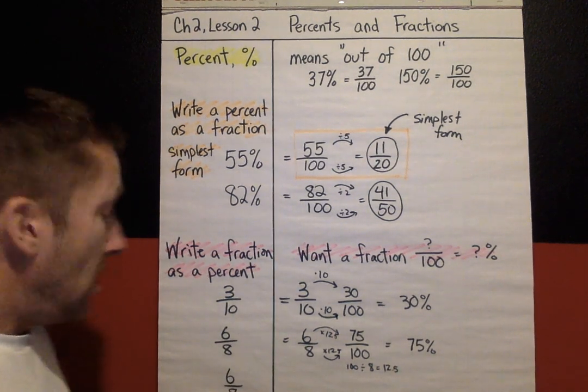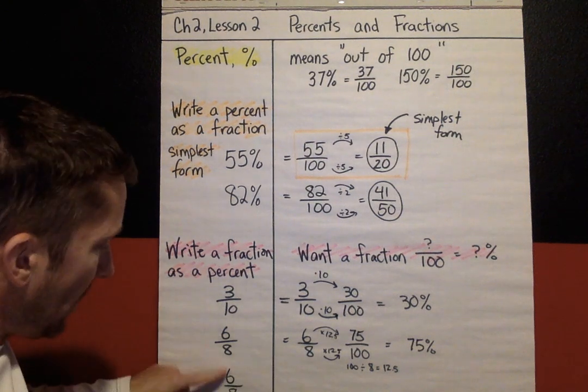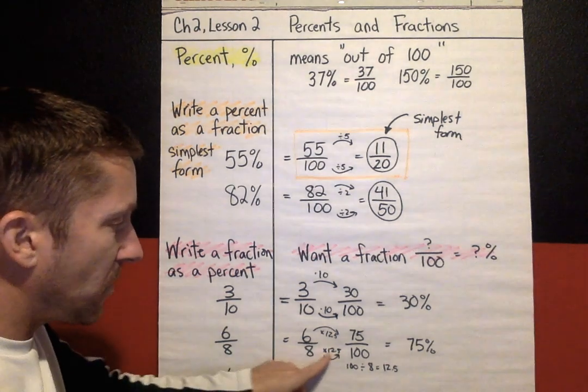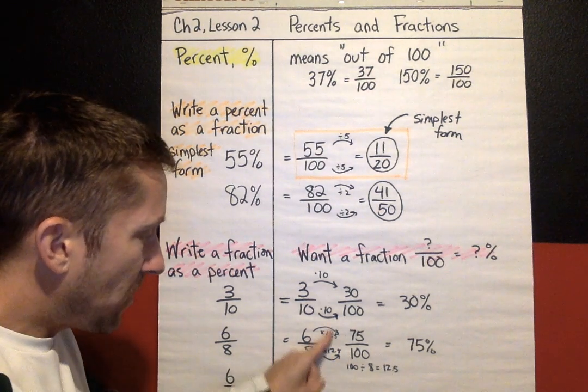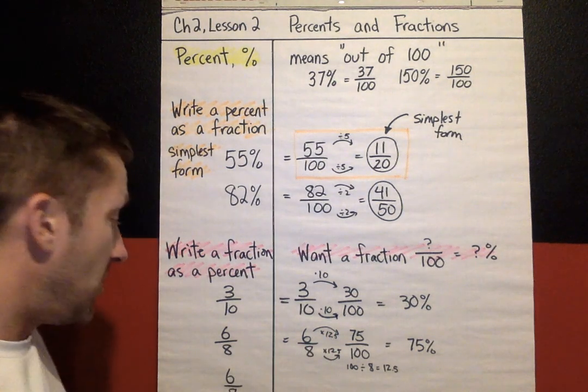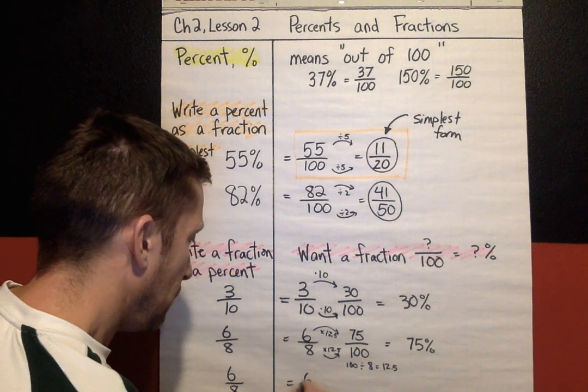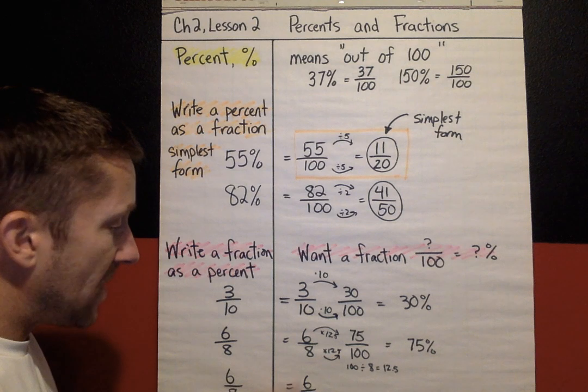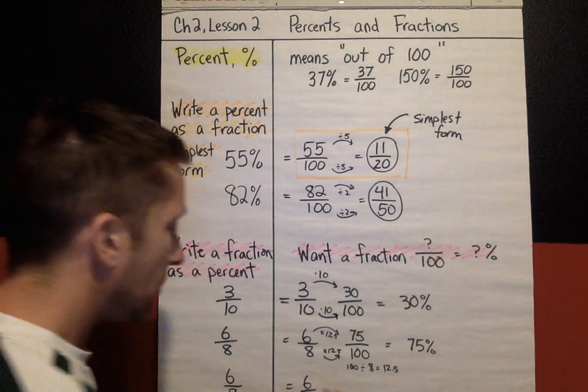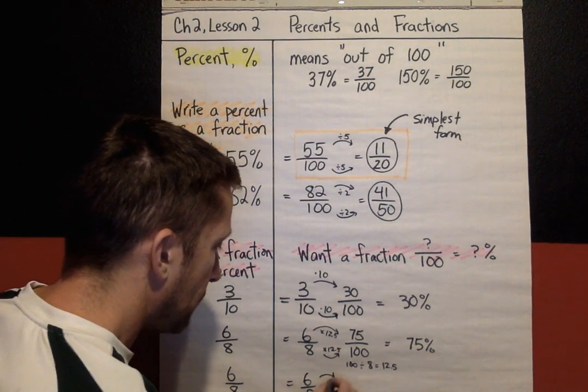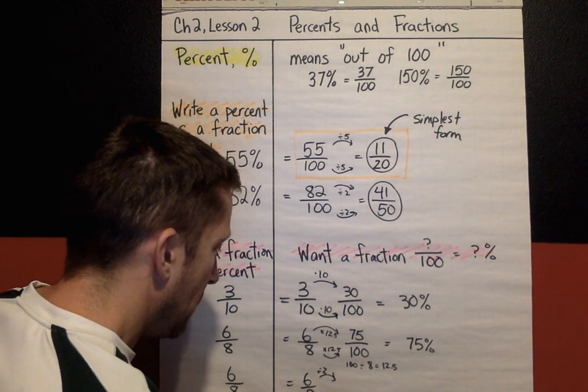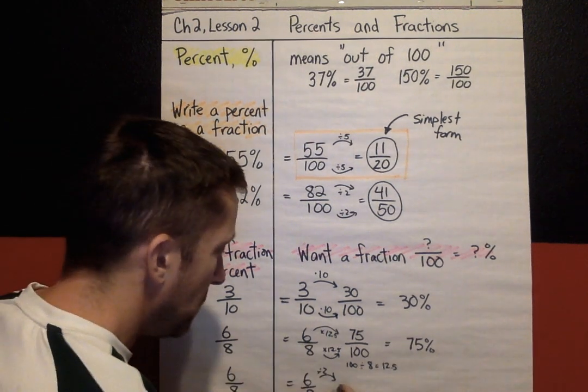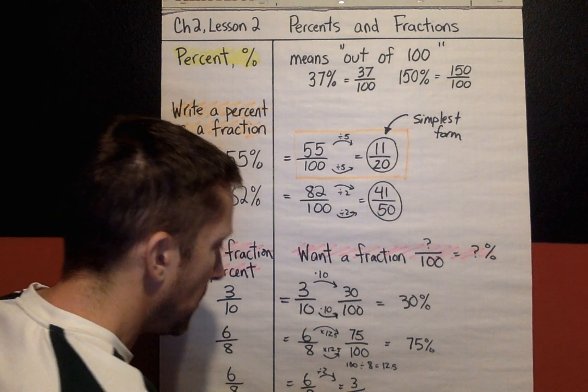Another strategy. 6 out of 8. So you can use this strategy right here, what are you multiplying by and multiply by the same number. Another thing you can do is simplify. Change 6/8 into another form that helps you get to 100. If we divide 6 and 8 by 2, it turns into 3/4.